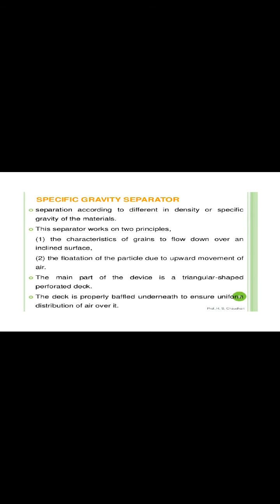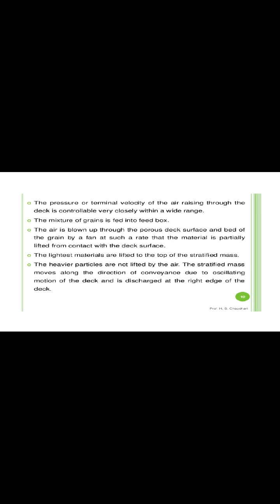The specific gravity separator performs seed separation on the basis of density or specific gravity of the materials. This separator works on two principles: the characteristic of grains to flow down over an inclined surface, and the flotation of the particle due to upward movement of air. The main part of the device is a triangular-shaped perforated deck. The deck is properly baffled underneath to ensure uniform distribution of air over it. The pressure or terminal velocity of the air passing through the deck is controllable within a wide range. The mixture of grain is fed into the feed box, and air is blown up through the porous deck surface. The bed of grain is partially lifted from contact with the deck surface, and the lightest materials are lifted to the top of the stratified mass while heavier particles are not lifted by the air.